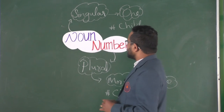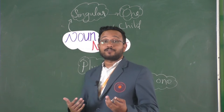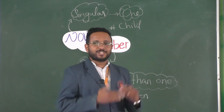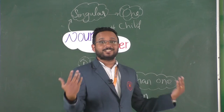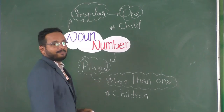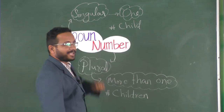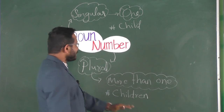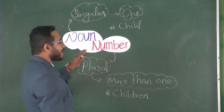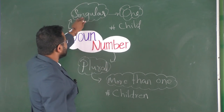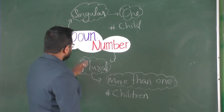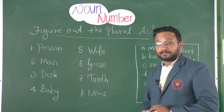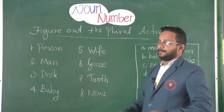Today we are going to look at noun number — singular and plural. Singular, plural: desk/desks, class/classes, student/students, teacher/teachers. So singular means one, for example 'child', and plural means more than one, 'children'. This is the central idea of the chapter — noun number: singular means one, and plural means more than one.